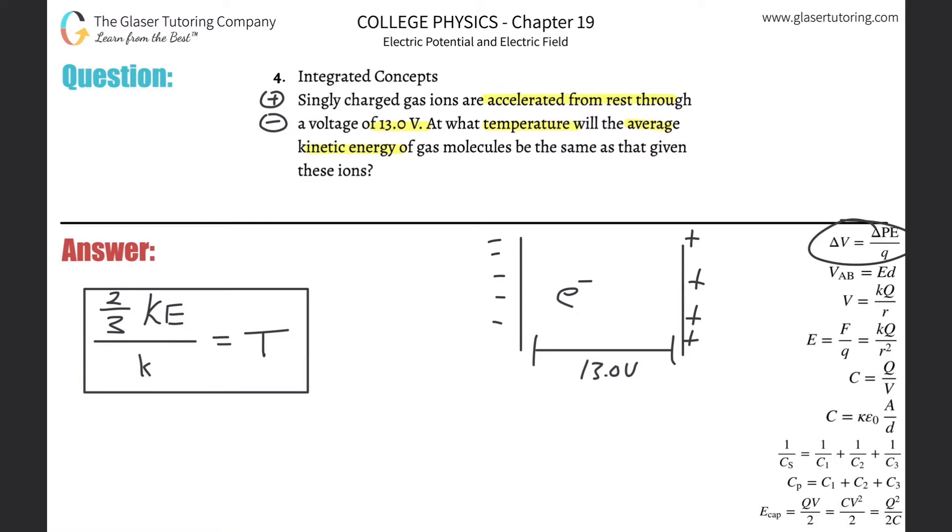That formula over there in the middle at the bottom there. Change in voltage is then going to be equal to the change in the potential energy of the object, all then divided by the charge of that particular object.